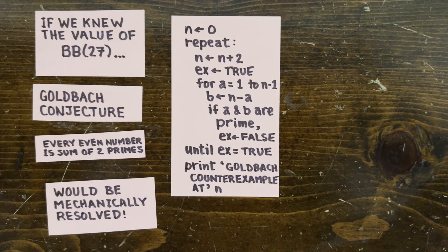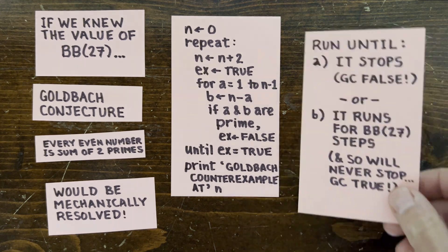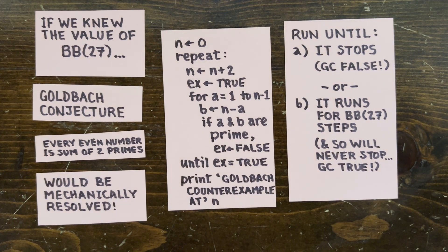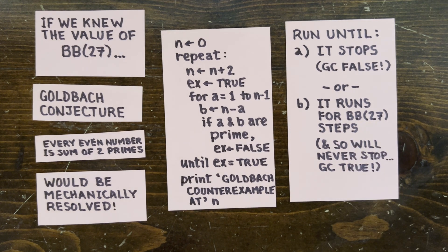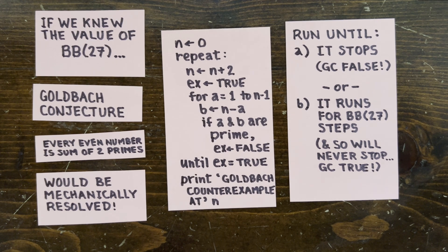It turns out there's a 27-state program that looks for a Goldbach counter-example. If it finds one, the program stops, otherwise it runs forever. So if we knew BB(27), we'd just run this program until it either stopped, which would prove the conjecture false, or until it hit the BB(27) step, after which we know it's going to run forever, which would prove the conjecture true. So no breakthrough in mathematics or genius mathematician would be needed.